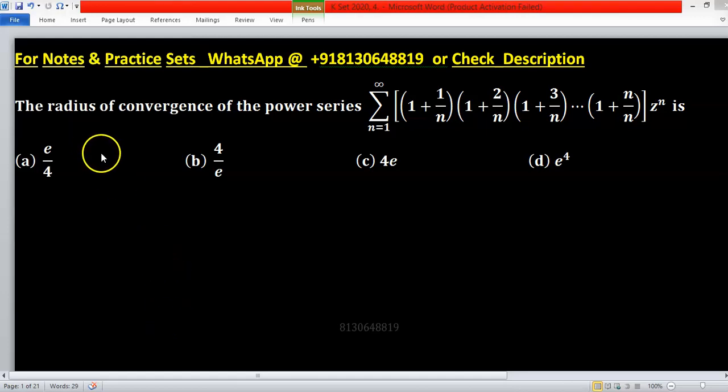We have to find radius of convergence of this power series. Radius of convergence is defined as r equals to 1 upon limit n tends to infinity u_n raise to the power 1 upon n.